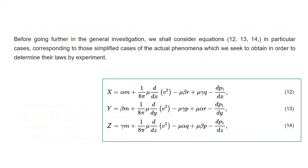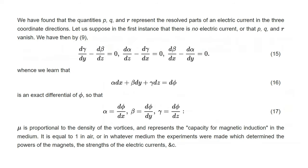Before going further in the general investigation, we shall consider equations 12, 13, 14 in particular cases corresponding to those simple cases of the actual phenomena which we seek to obtain in order to determine their laws by experiment. We have found that the quantities p, q, and r represent the resolved parts of an electric current in the three coordinate directions. Let us suppose in the first instance that there is no electric current, or that p, q, and r vanish. We have then by equation 9: dγ/dy − dβ/dz = 0, dα/dz − dγ/dx = 0, dβ/dx − dα/dy = 0. Whence α·dx + β·dy + γ·dz = dφ is an exact differential of φ, so that α = dφ/dx, β = dφ/dy, γ = dφ/dz.